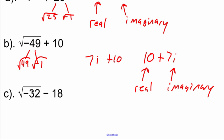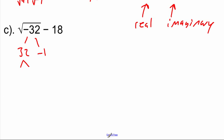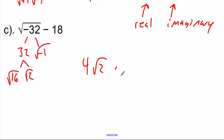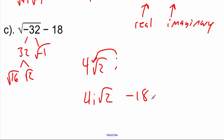This last example is a little trickier because 32 is not a perfect square. I'll break it down into 32 and negative one, then break 32 further into 16 and 2. The square root of 16 is 4, the square root of 2 stays as root 2, and the square root of negative one is i. We typically place the i between the 4 and the remaining square root, giving us 4i root 2. With the minus 18, we write it in standard form as negative 18 plus 4i root 2.